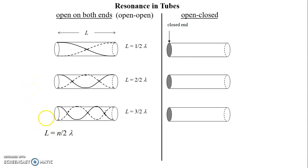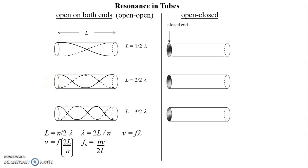We can write the same equation: L equals N over 2 times lambda. Going through the derivation, lambda equals 2L over N, and V equals F times lambda. Putting it all together, V equals F times 2L over N, which rearranges to FN equals NV over 2L. Notice this is the exact same equation as for standing waves on a string, because just as the open-open tube must have antinode-antinode at both ends, a string fixed on both ends has node-node — giving us the same form of equation.